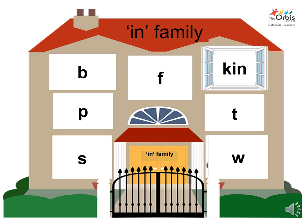Let's find out the name of the third family member living in the house. The phonics sound of letter K is K. Now, combine the sound of K with the sound 'in' to get the name of the person inside the window.